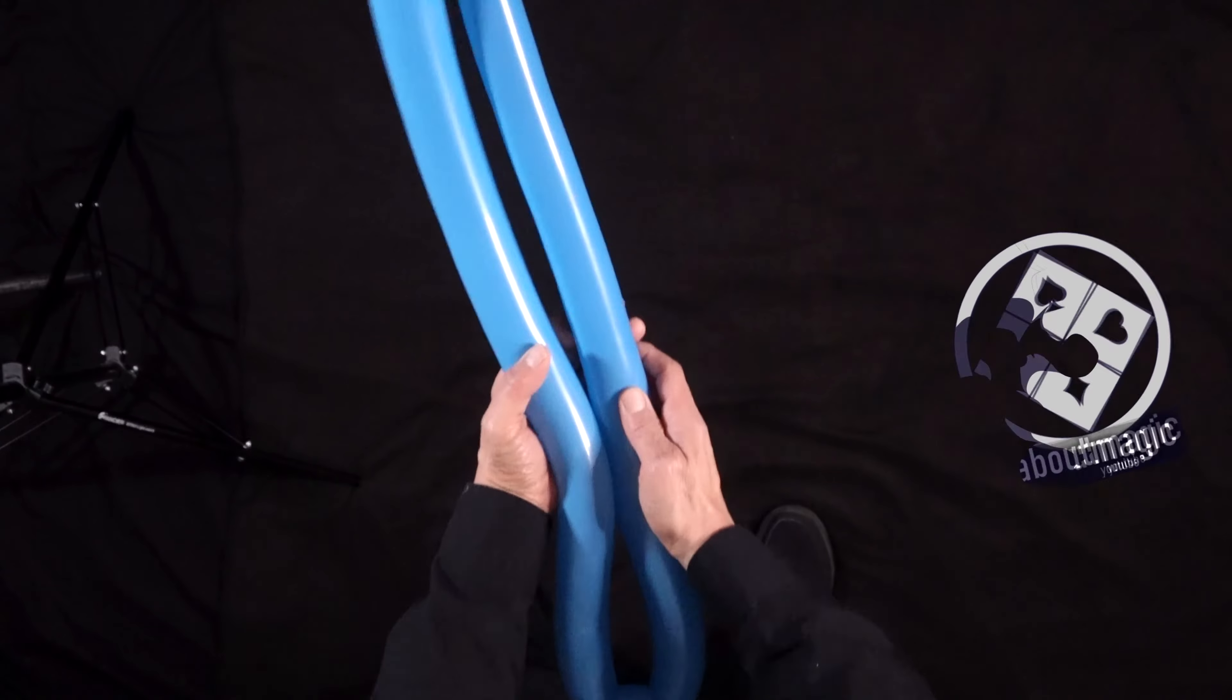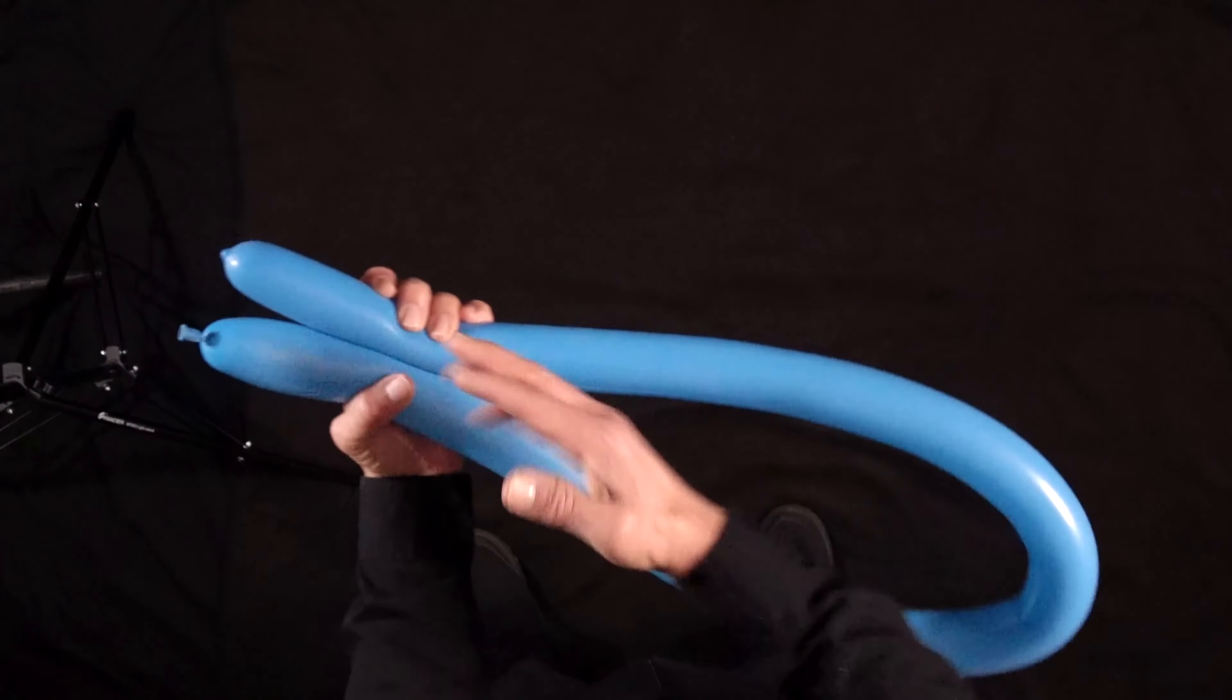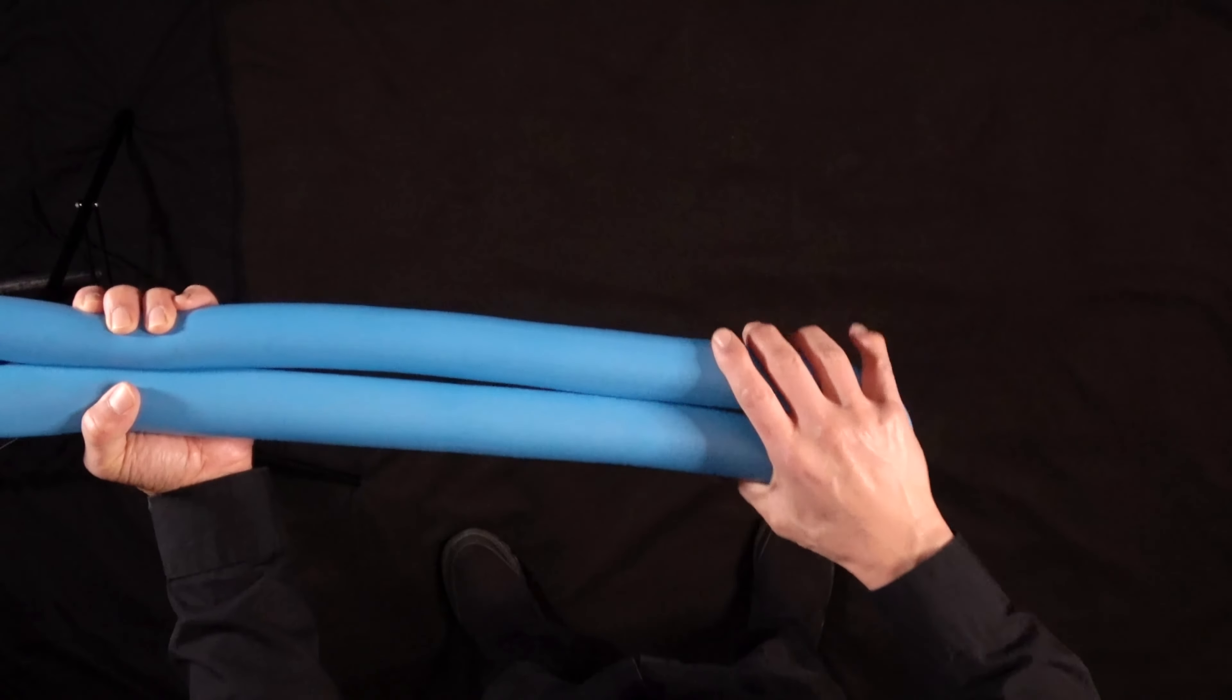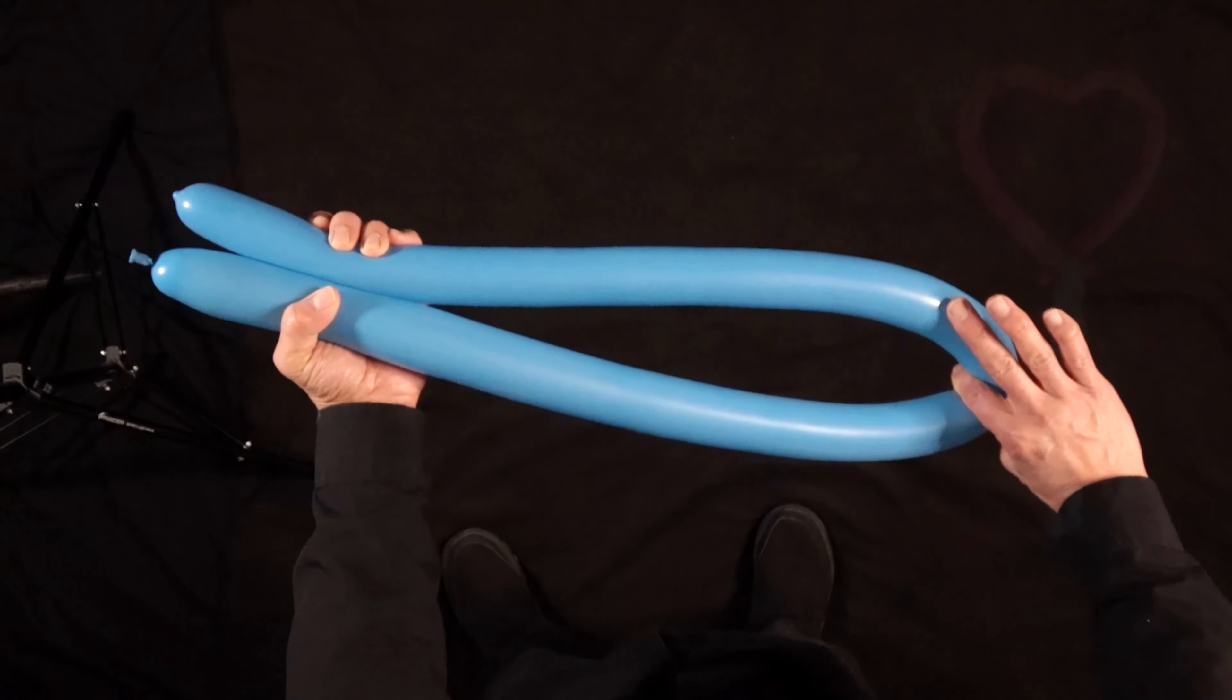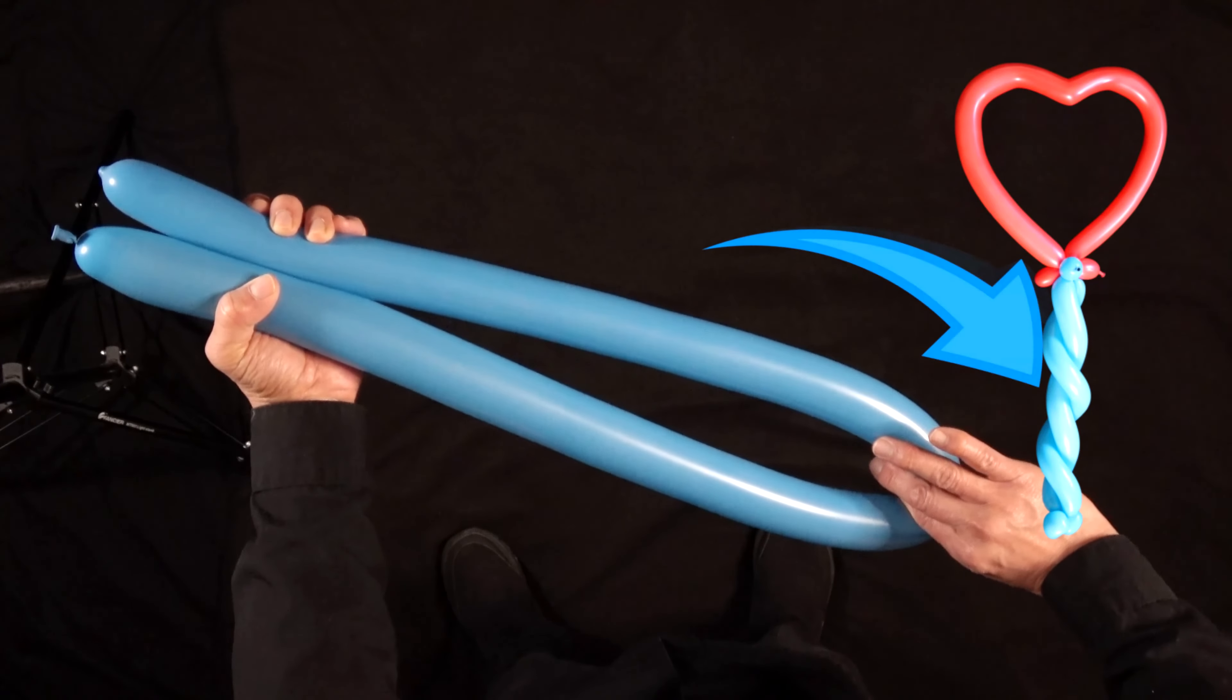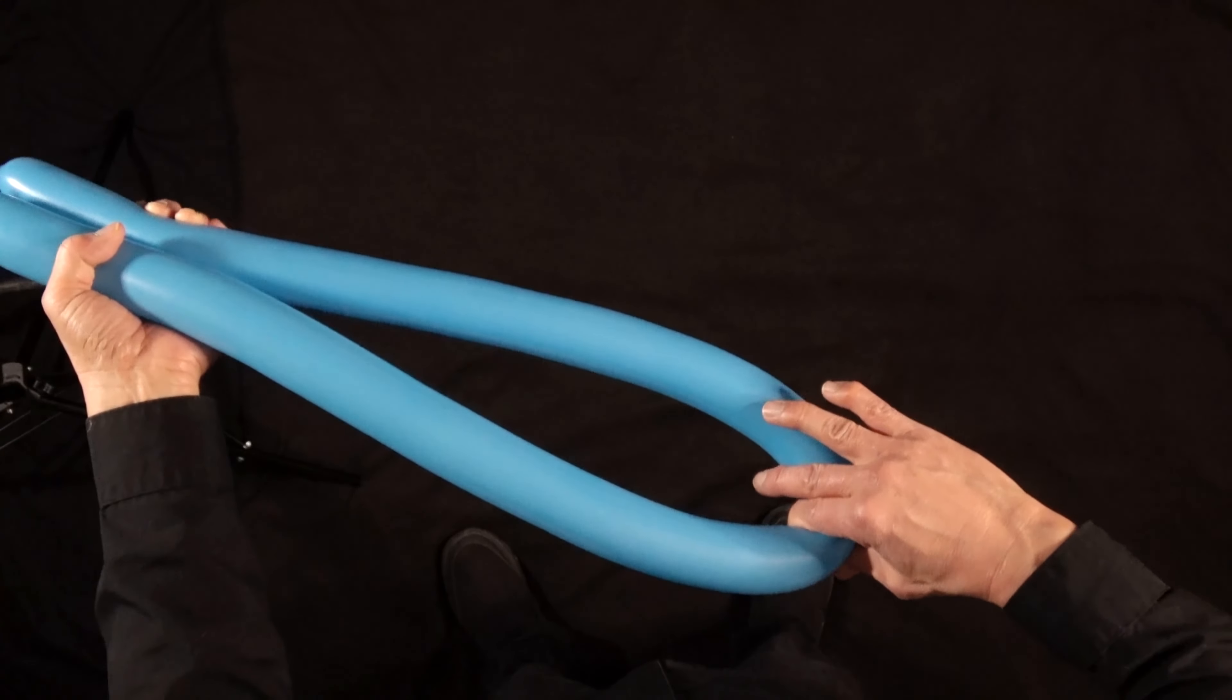Now bend your balloon in half, line up the ends, find the midpoint here, and we're going to start to make our stick for the balloon. So pinch here and twist.